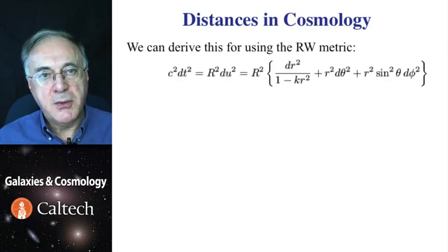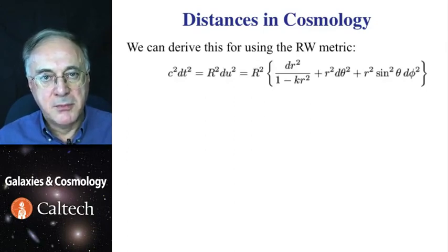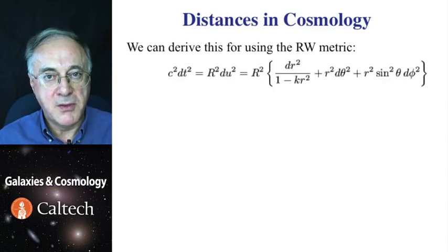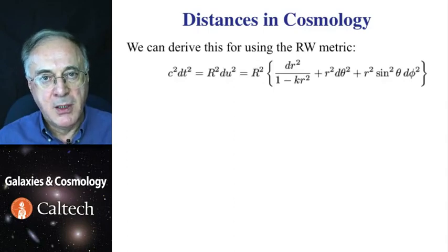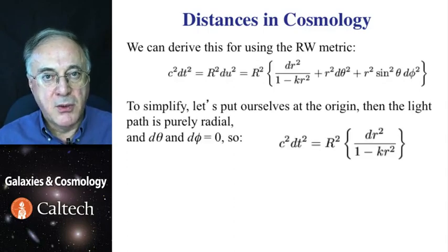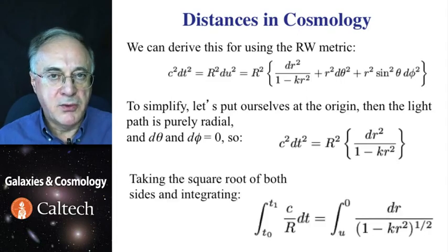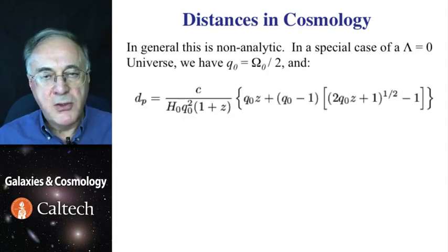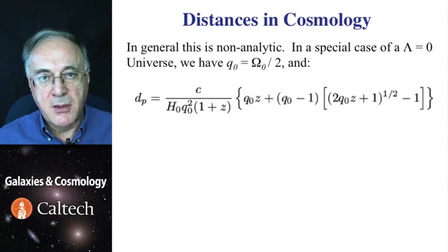So, how can we derive this? We'll start with Robertson-Walker metric, the basis of all relativistic cosmological models. Since only the radial coordinate matters, by and large, we can then simplify that, get rid of both the angular terms, and just have the radial term. So, we'll take the square root of both sides and integrate. Generally speaking, this integral cannot be solved analytically. It has to be solved numerically.